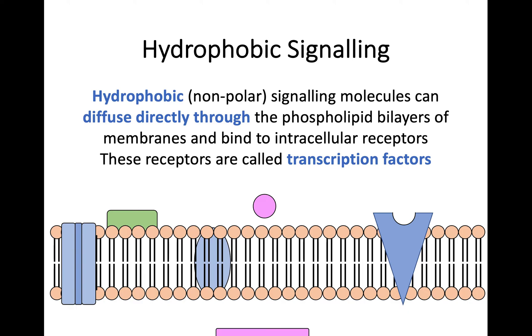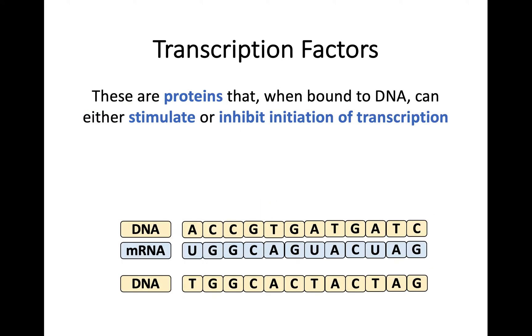These hydrophobic signaling molecules diffuse directly through and they're going to bind to receptors inside the cell. These receptors are called transcription factors. As this diagram shows, they pass straight through, binding to a transcription factor.